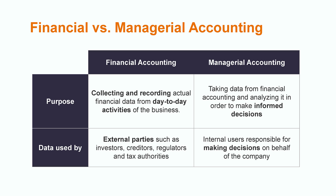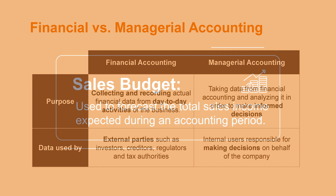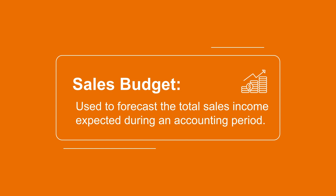Management makes necessary corrections as they identify the variance, which is actual versus budget. For example, a company may want a sales budget to forecast the total sales income expected during the accounting period. If the company offers multiple products, it may be helpful to separate each type into different rows.